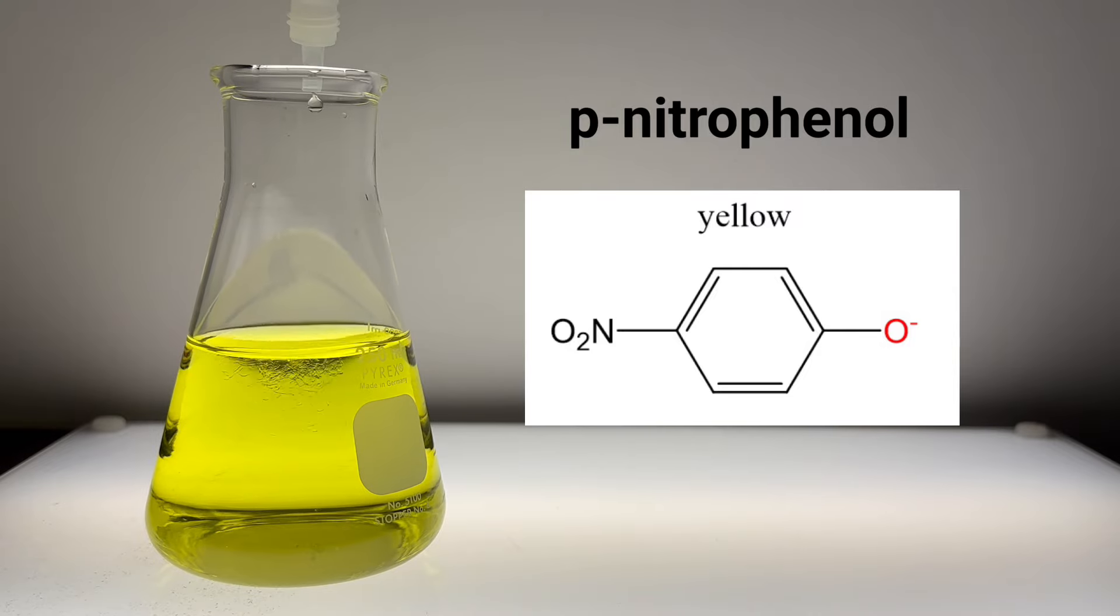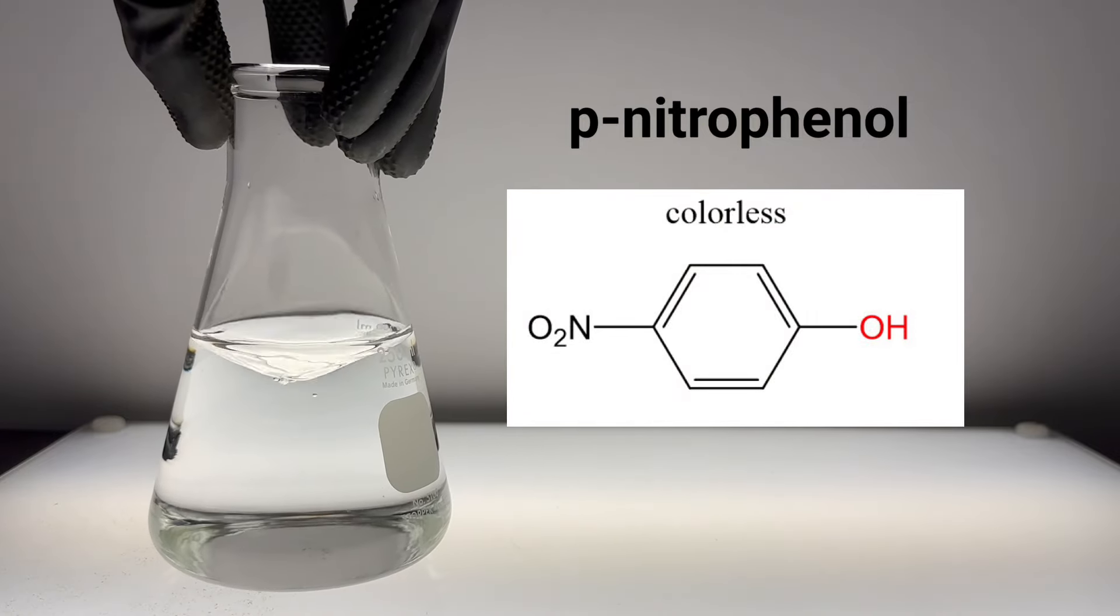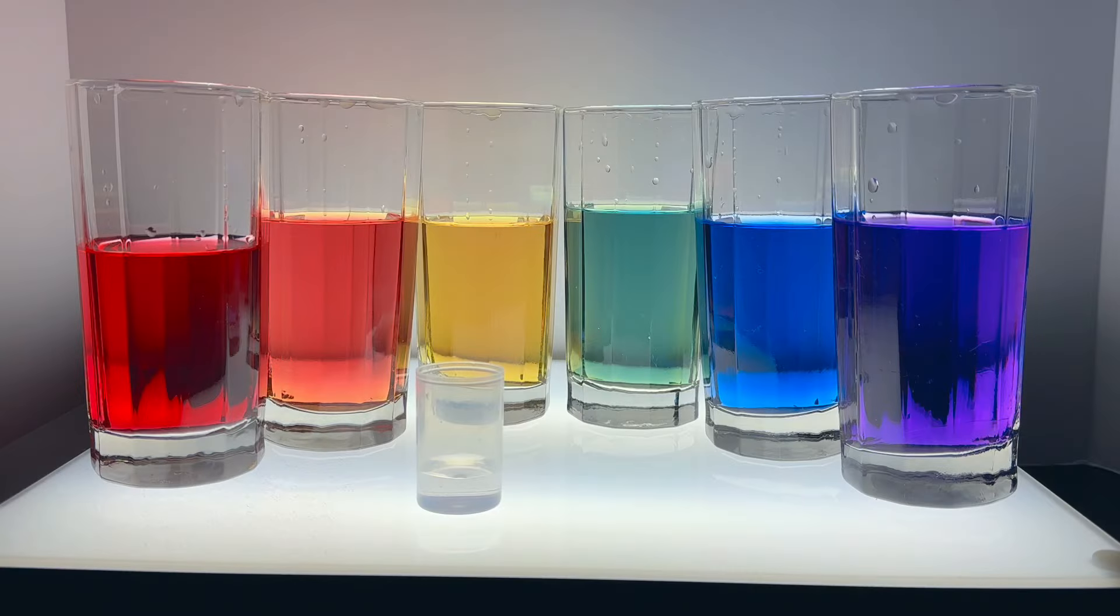And again, just like with the other indicators, addition of acid to paranitrophenol switches it back to the colorless form. Mixing these three indicators in different proportions allows you to generate all the colors of the rainbow.